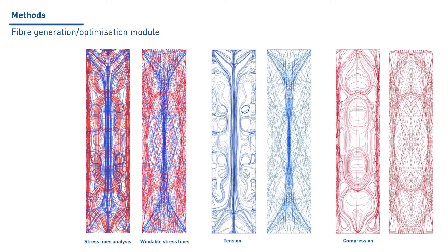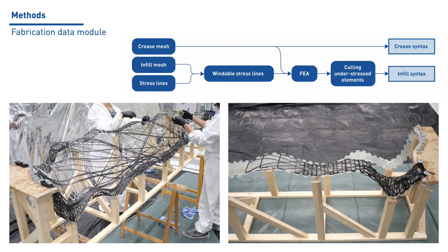In a following step, the filigree structure is further optimized by checking the minimum strut span, culling understressed elements, and performing a cross-section optimization to define the amount of fibers per trajectory. The fabrication data module generates the information for producing the rigid formwork that fixes the GFRP plate into position, as well as the cutting patterns of such plates, and the winding instructions for both the creases and the infill. The prototype is then fabricated by hand-winding the fibers following the sequence provided by the software.